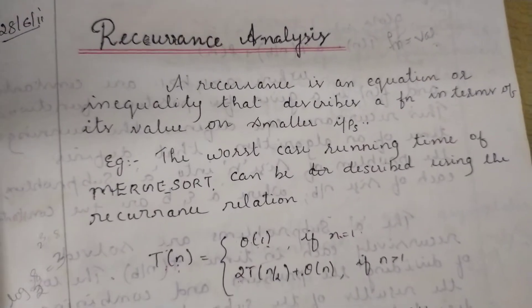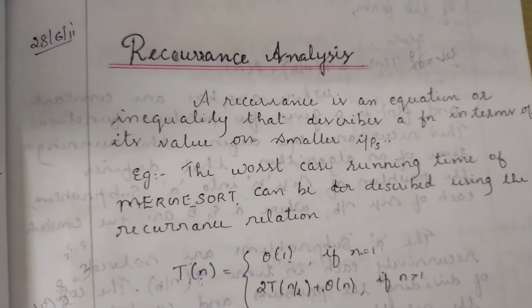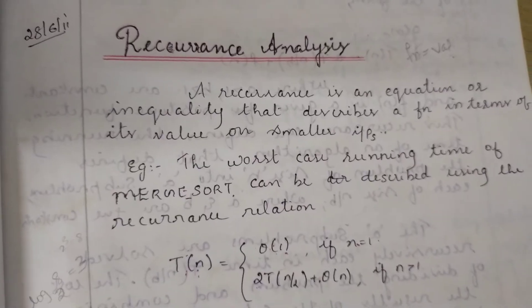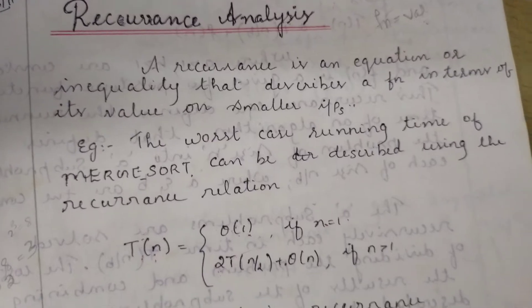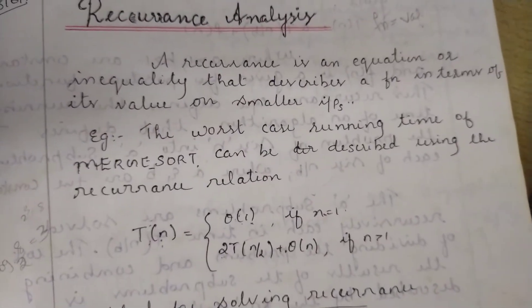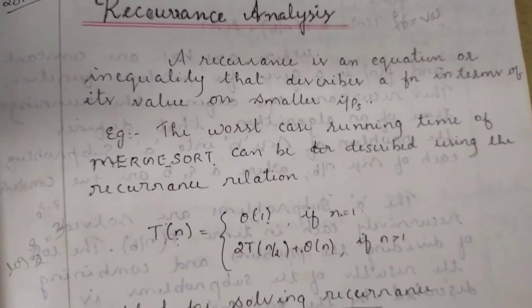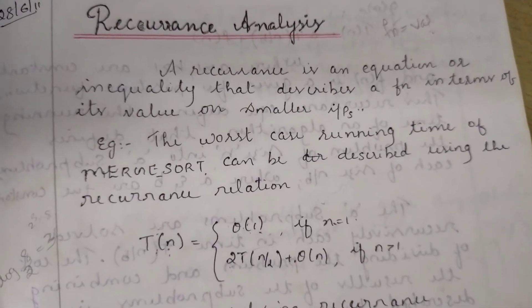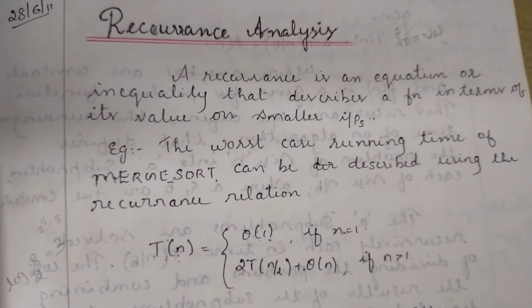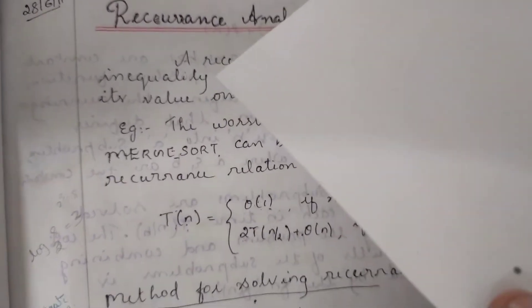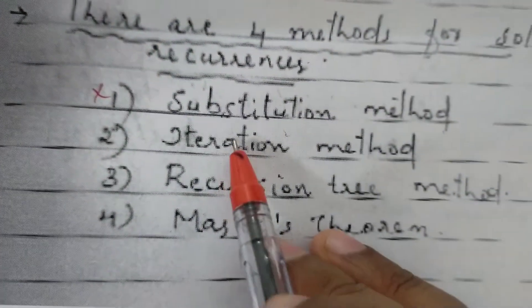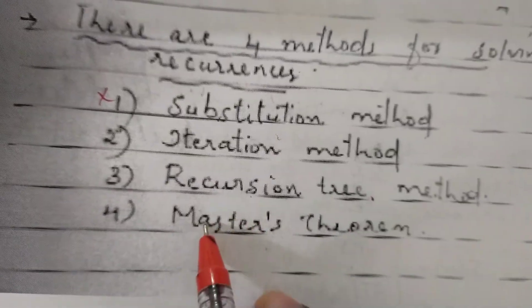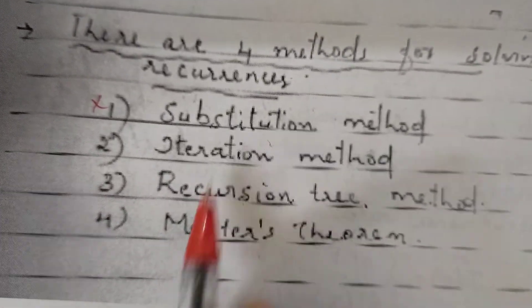We need to solve recurrence relations using some methods: Substitution, Iteration, and the Master Theorem. We need to learn the iteration method in particular.